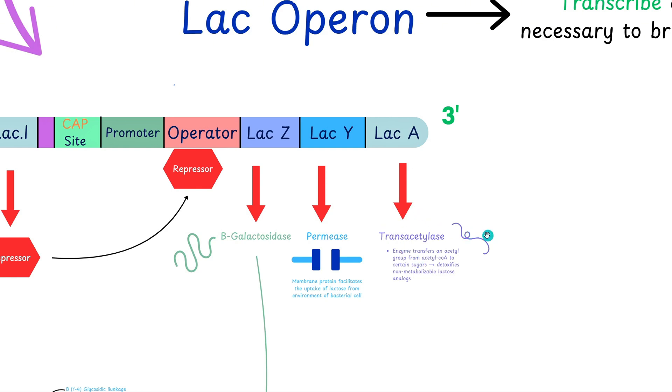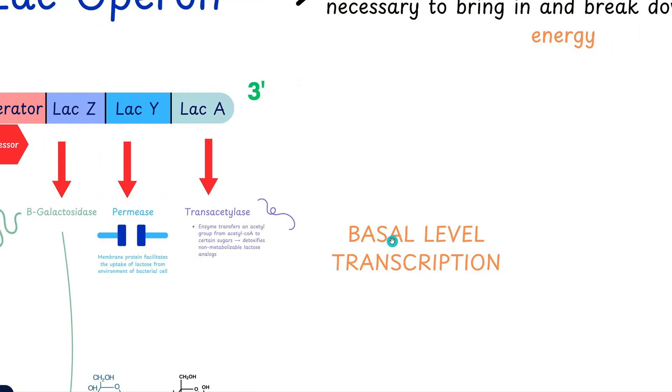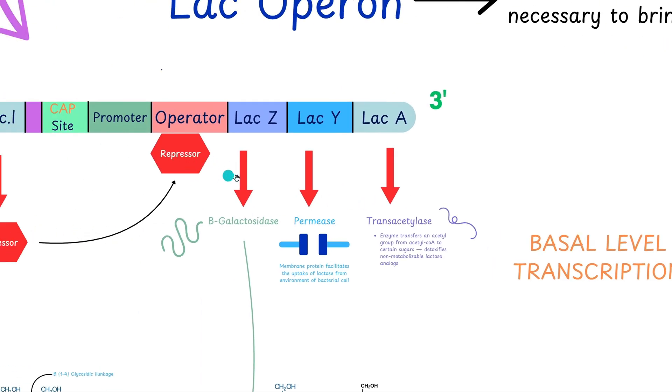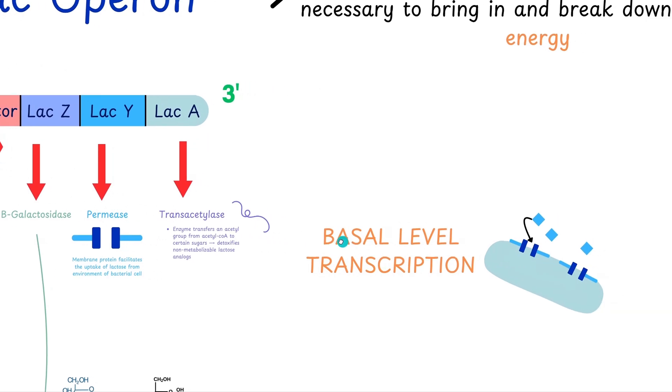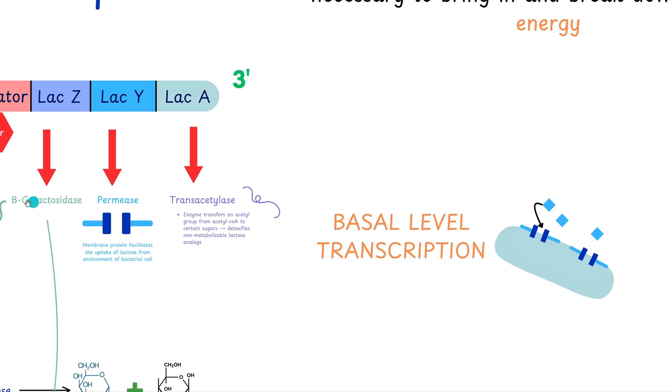An important concept here is actually basal-level transcription. Even though the repressor encoded by lac I that we see here binds to the operator, there's always a low level of basal transcription going on. This ensures that a small amount of permease allows lactose to enter when it becomes available. Basal transcription is crucial because it gives the cell the initial tools needed to start breaking down lactose.